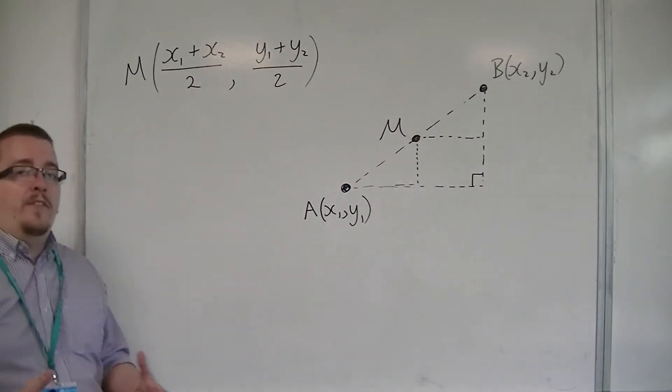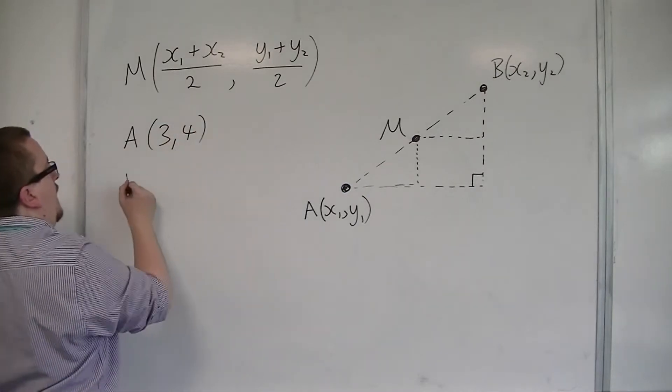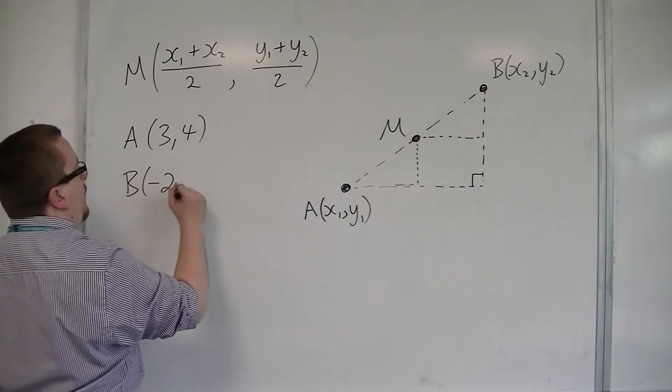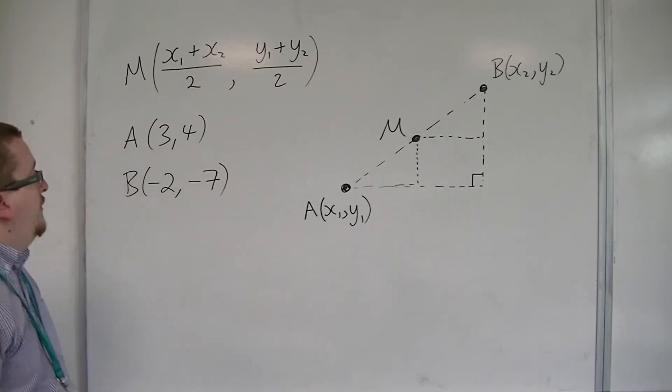So let's say we had two coordinates. A is 3, 4, and B is minus 2, minus 7, and I want to find the midpoint of these two coordinates.